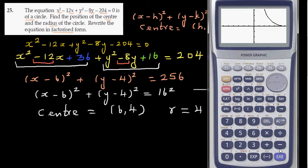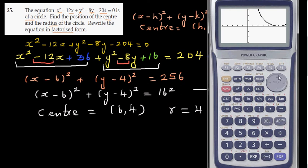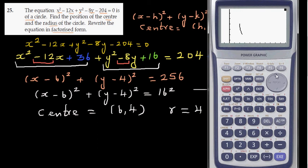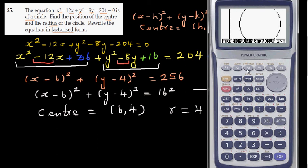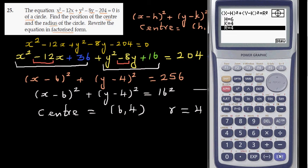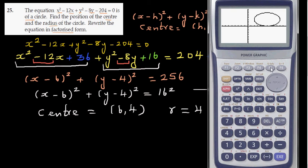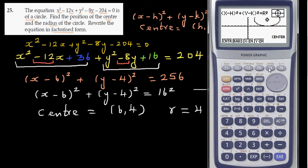Draw the circle on the calculator. Scroll up to see the whole circle, and you can make it a 10 by 10 view — it may not look perfectly circular on screen, but it is a circle. The calculator confirms: center is 6 comma 4 and radius is 16.